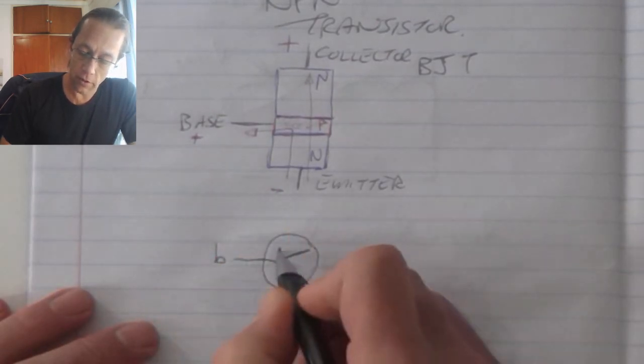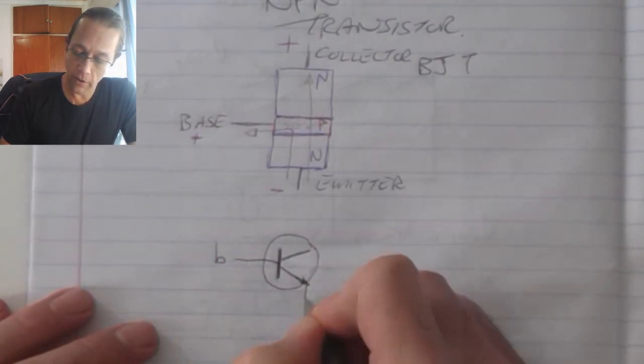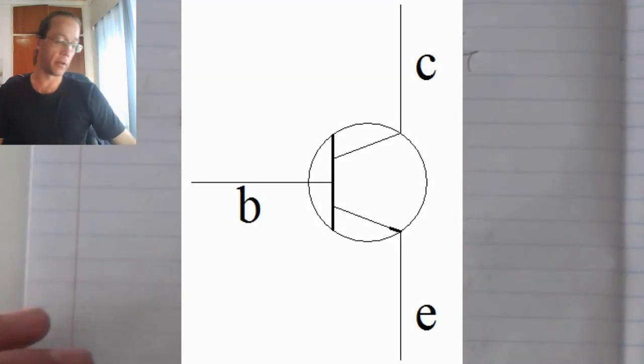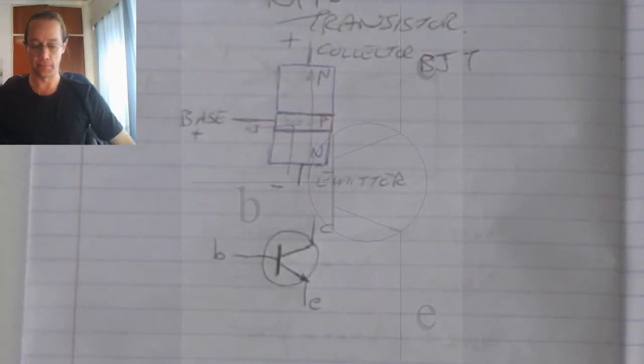We've got our base on the vertical. The emitter has the arrow on it and then the top one over there is my collector without anything on it.